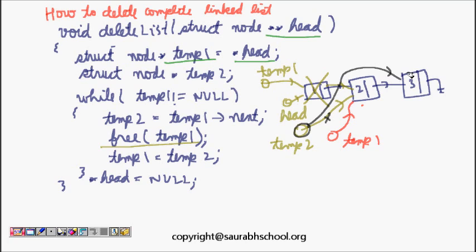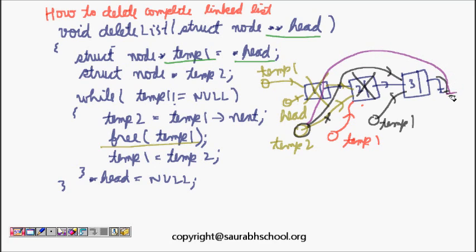Now temp2 points to node 3 and temp1 also points to node 3. While temp1 is not null: temp2 = temp1->next, which is null. So temp2 becomes null. I do free(temp1) — this last node is also gone. Then temp1 = temp2, so temp1 also becomes null. The loop condition temp1 != null is now false, so we exit. This is the way we delete the entire list.